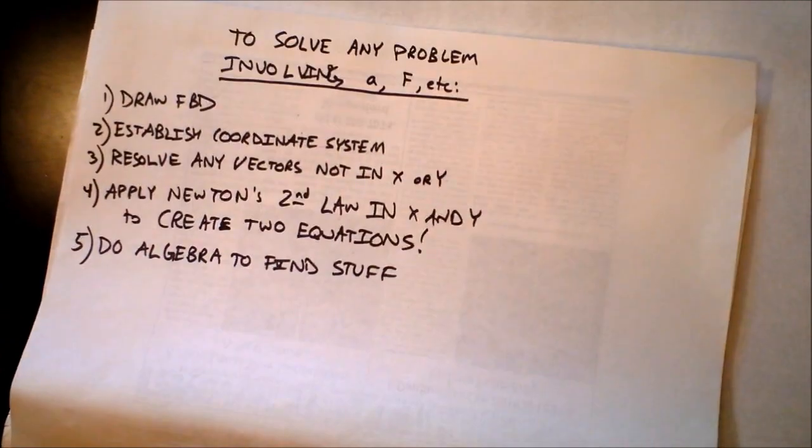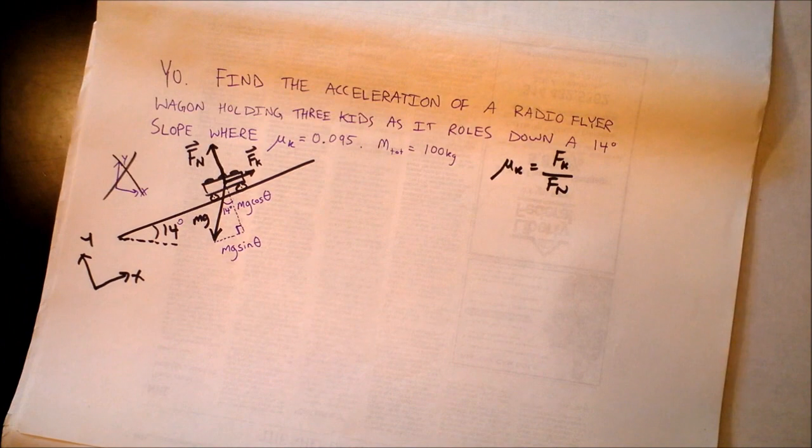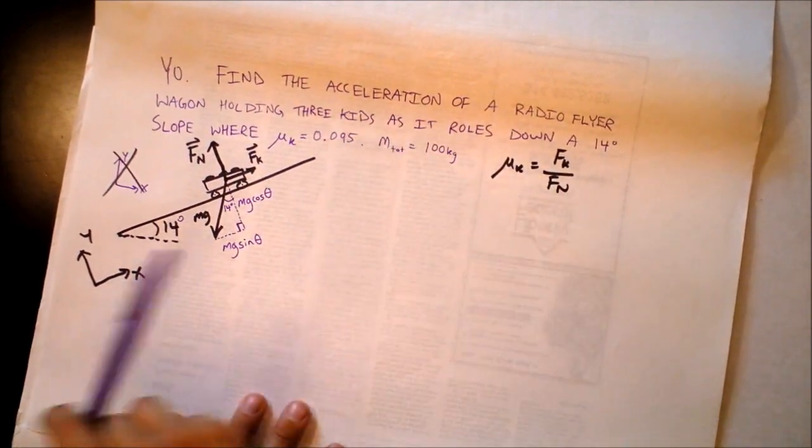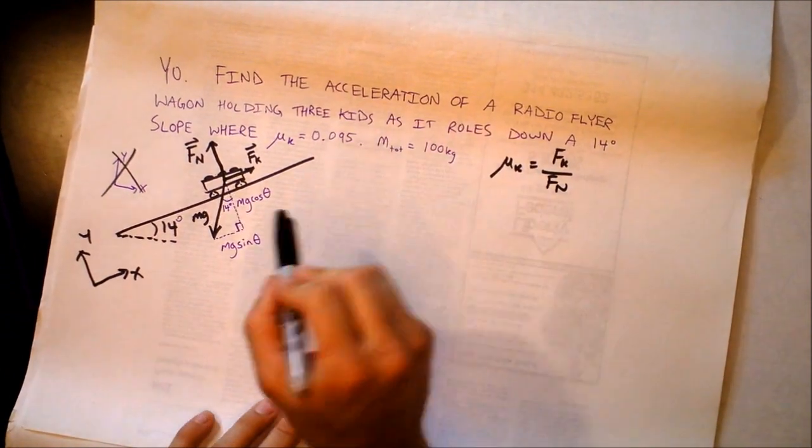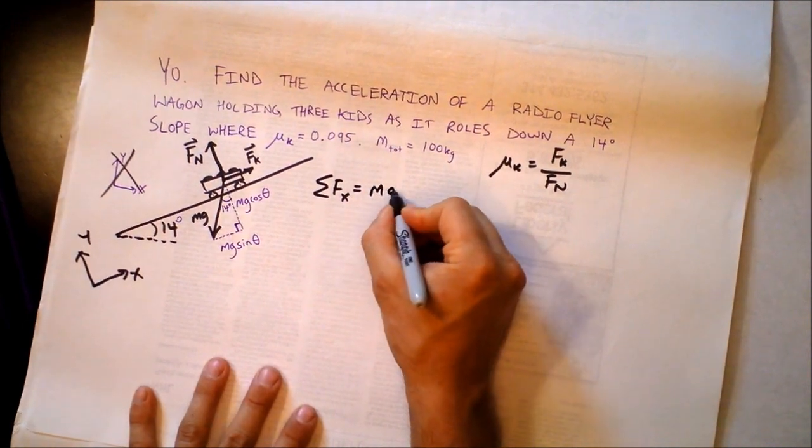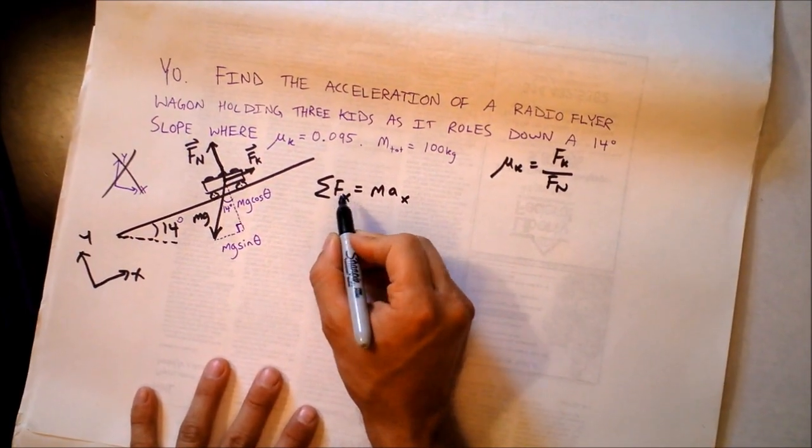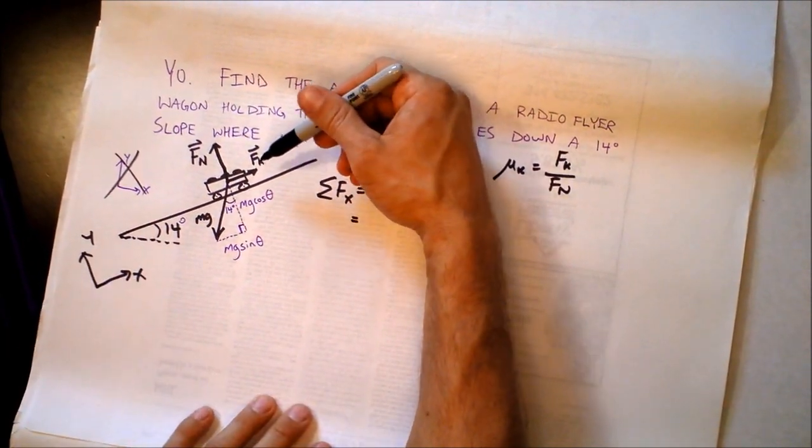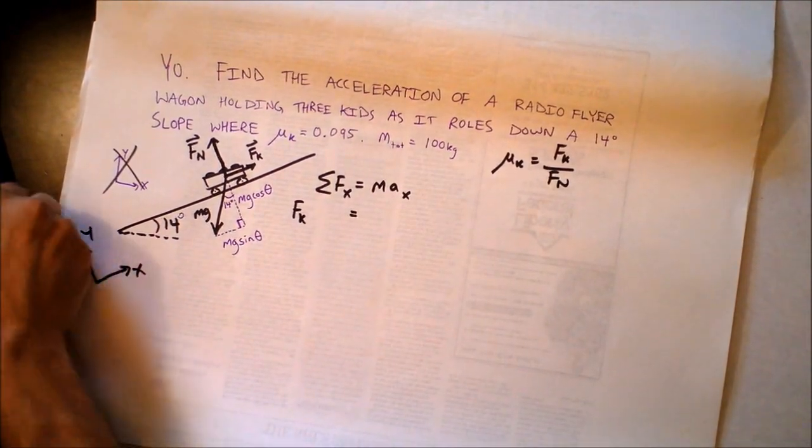Next step. Apply Newton's second law in the x and y direction to create two equations. Just work through it. We write down, first, the net force in the x direction is mass times acceleration in the x direction. And this is a set of instructions right here. This says add them up. And this says all the forces in the x direction. So what are the forces in the x direction? Well, there are two of them. One of them is the force of friction. So I'm going to write f sub k right here.